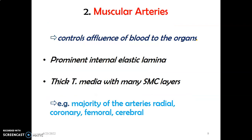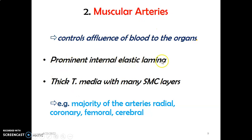Number two: muscular arteries. The main function of muscular arteries is to control the influx of blood to the organs. They have a prominent internal elastic lamina — very visible — because the elastic fiber in them stains dark, while the tunica media is muscular with smooth muscle cells. So you can differentiate the dark elastic fiber from the smooth muscle cells that are not dark. Muscular arteries have thick tunica media mainly made up of smooth muscle cells, unlike elastic arteries. Therefore, the internal elastic lamina is prominent. Examples: the radial arteries, coronary arteries, femoral artery, and cerebral arteries.